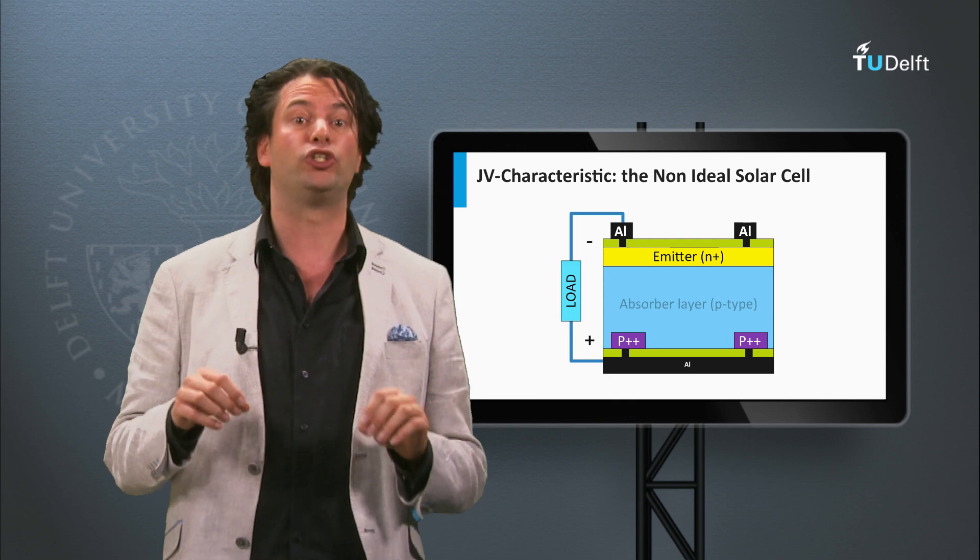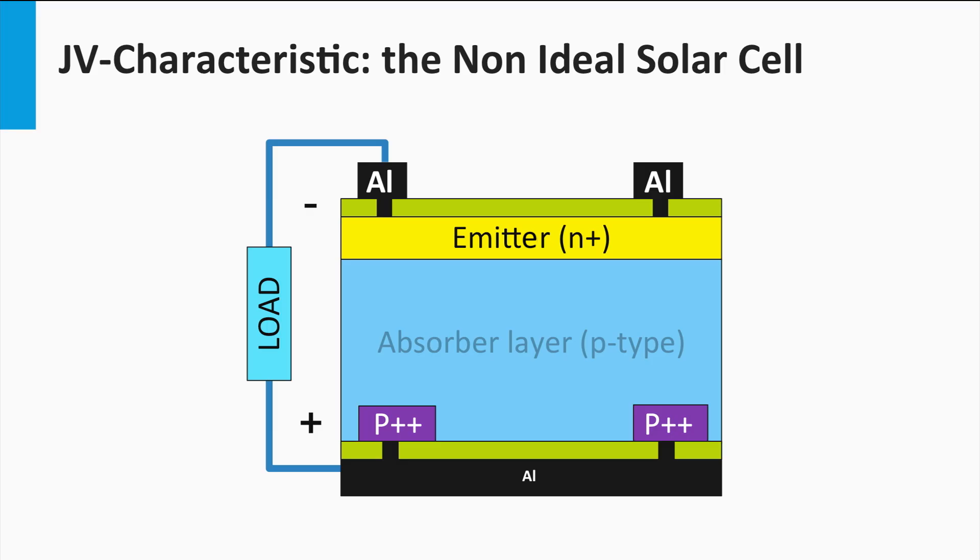The second resistance is the so-called parallel resistance, or also referred to as the shunt resistance. A shunt is a macroscopic defect in the solar cell which provides an alternative path for the generated photocurrent. Examples of a shunt are a crack through the semiconductor layers or a current path at the edge of the solar cell.